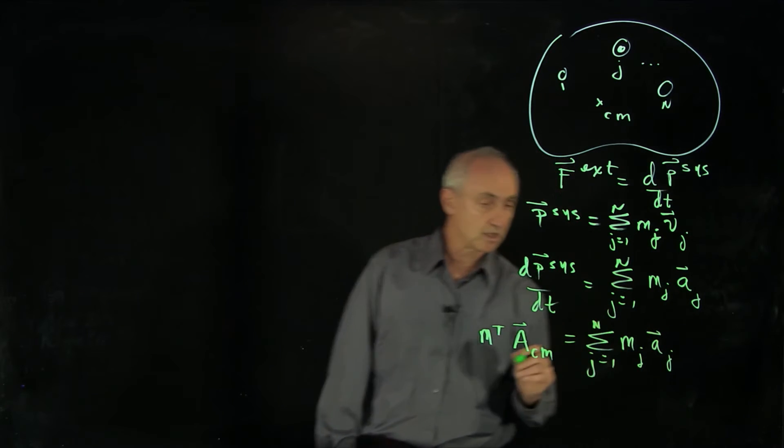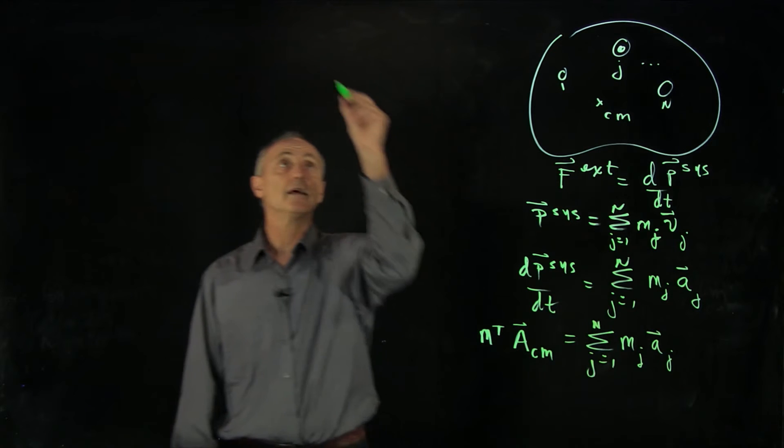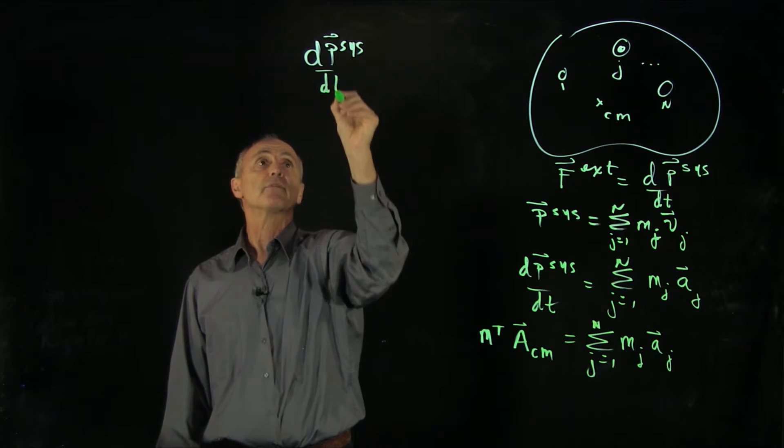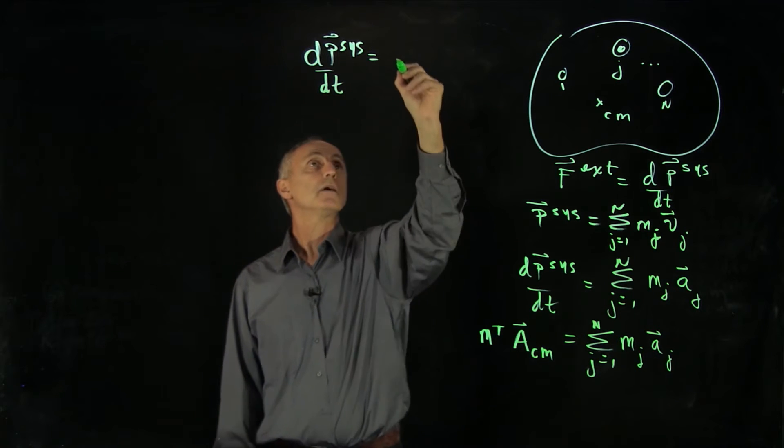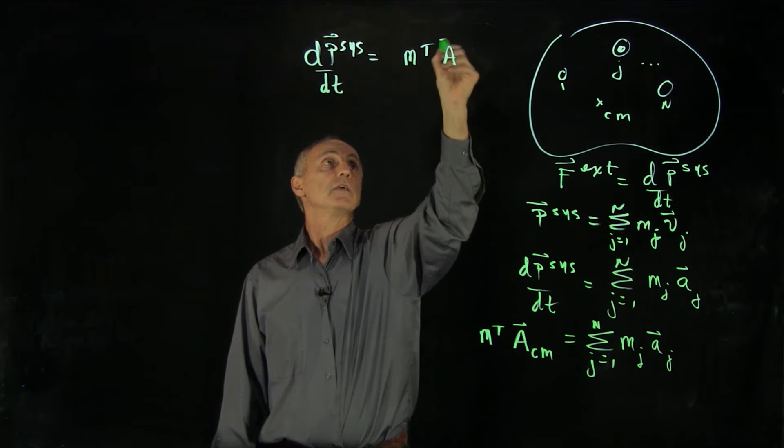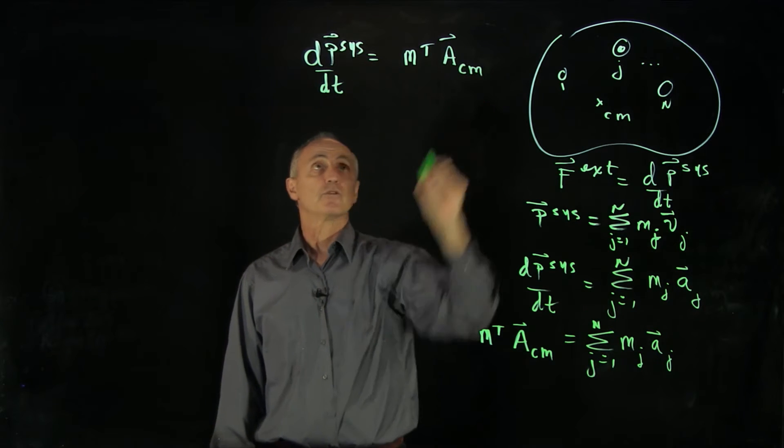j goes from 1 to n. So we see that another way to think about how the momentum of the system of particles is changing is simply the total mass times the acceleration of the center of mass.